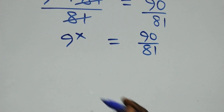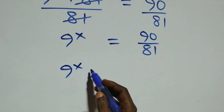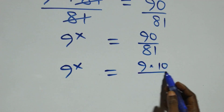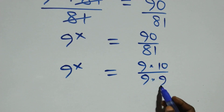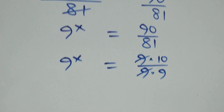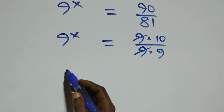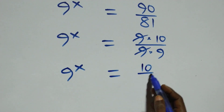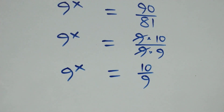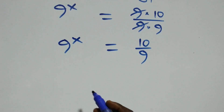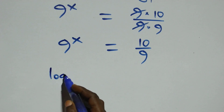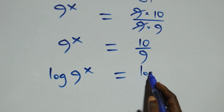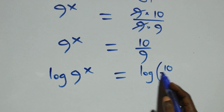The next step: we have 9 raised to power x equals 9 times 10 over 9 times 9. Here, nine cancels with each other, and we have 9 raised to power x equals 10 over 9. Next step: we take the log on both sides, so we have log of 9 raised to power x equals log of 10 over 9.